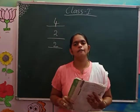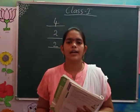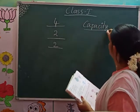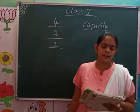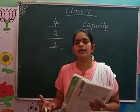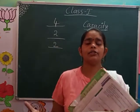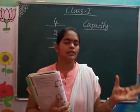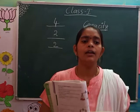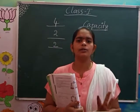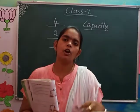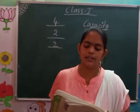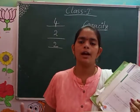That's all about weight. Now we have to learn about capacity. What is meant by capacity? Capacity tells us how much water a container can hold. For example, a water bottle has a specific capacity — a half liter or one liter. A bigger container will hold more water than a smaller container.